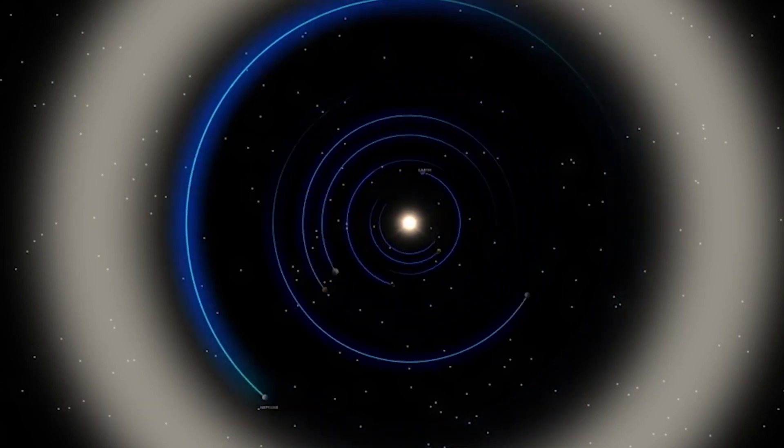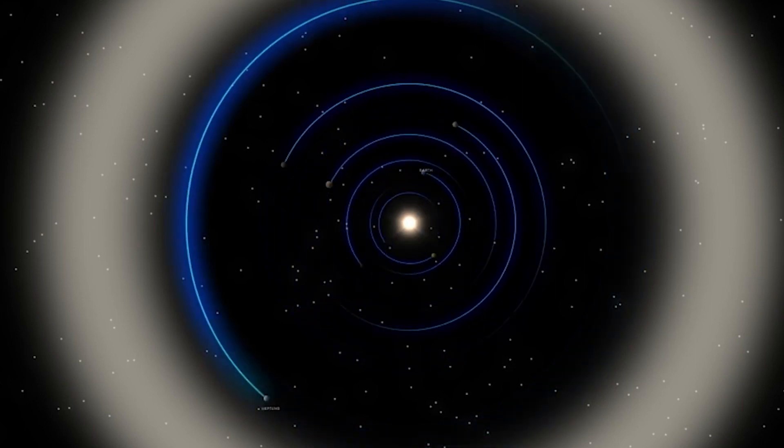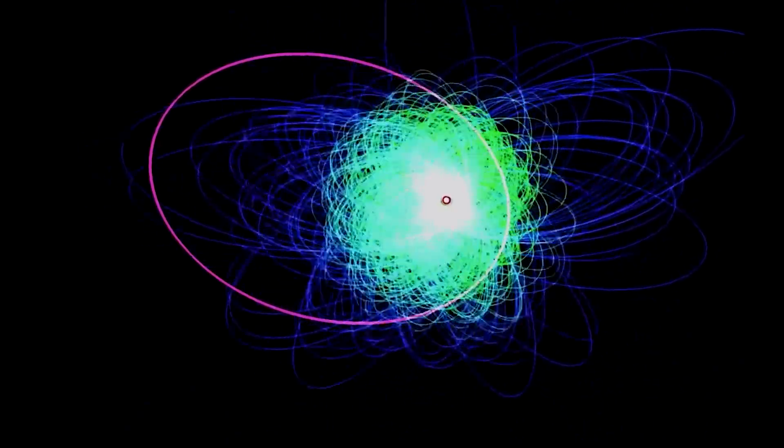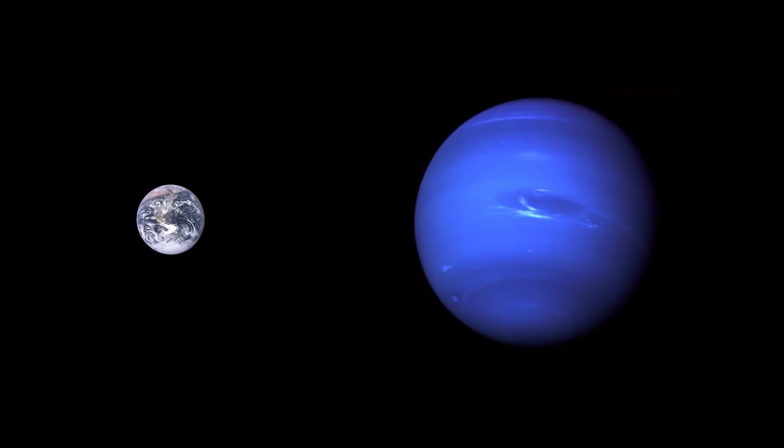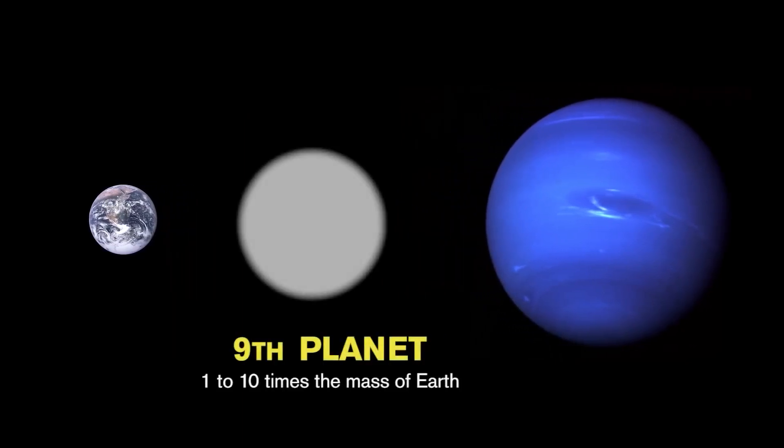According to Batogin and Brown's models, only an object with about as much mass as Neptune can stretch and tilt the orbits of Sedna and the other clustered Kuiper Belt objects. That means Planet 9 is about 10 times as massive as Earth, making it a little smaller than Neptune or Uranus.